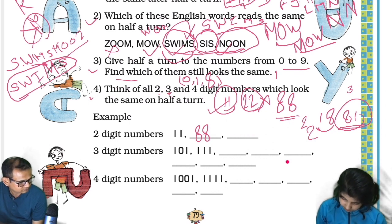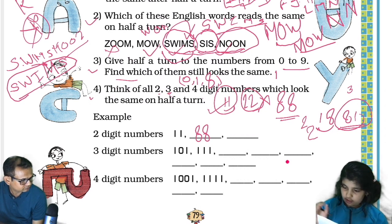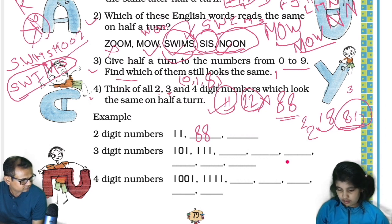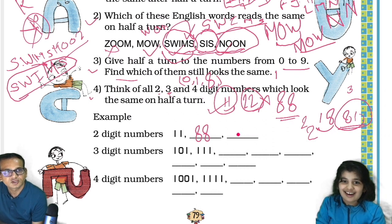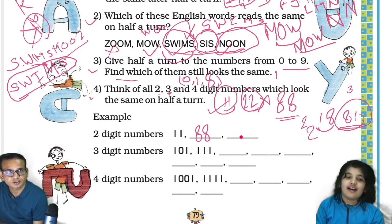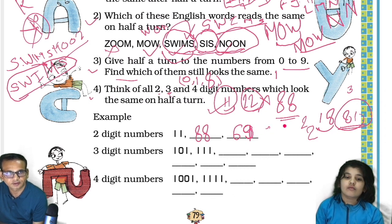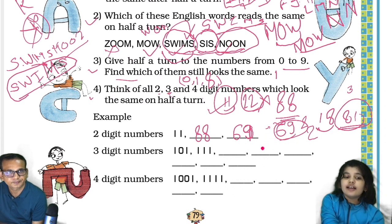Let me check — yes, 69. So another two digit number is 69. If you turn it, it will be like this — this becomes this and this becomes this. Both will be 69. Avisha, don't shortcut — just write 69 on a paper and turn it over, then you'll see. That's it.